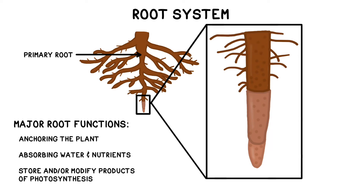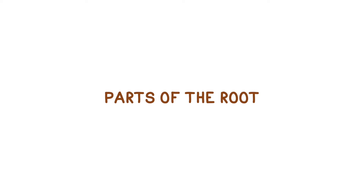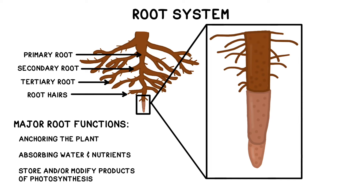The root system consists of primary, secondary, and sometimes even tertiary roots, in addition to root hairs, which help to increase their surface area. The last centimeter or so of the root is where cell division occurs, and there are three major zones. The zone of cell division is where new cells are formed — if you've looked at onion root tips while studying mitosis in class, this is likely the area you observed.